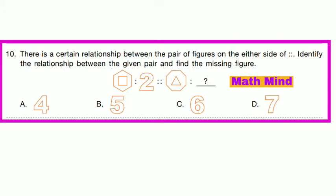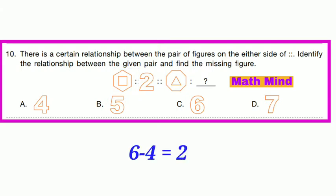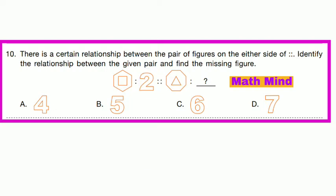Question No. 10: There is a certain relationship between the pair of figures on either side. Identify the relationship and find the missing figure. The outer figure has 6 sides and the inner figure has 4 sides — difference is 2. Following the same pattern, the outer figure has 8 sides and the inner figure has 3 sides — difference is 5. Option B is correct.